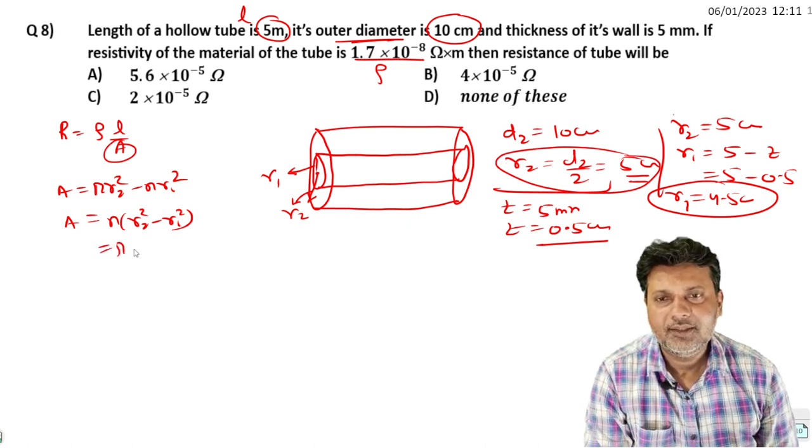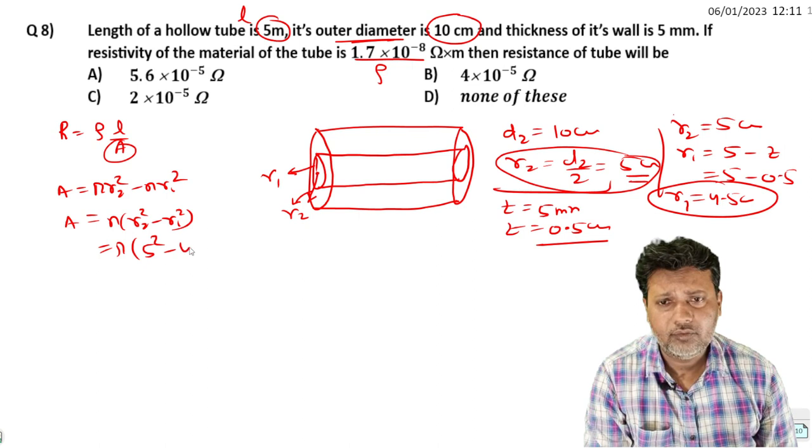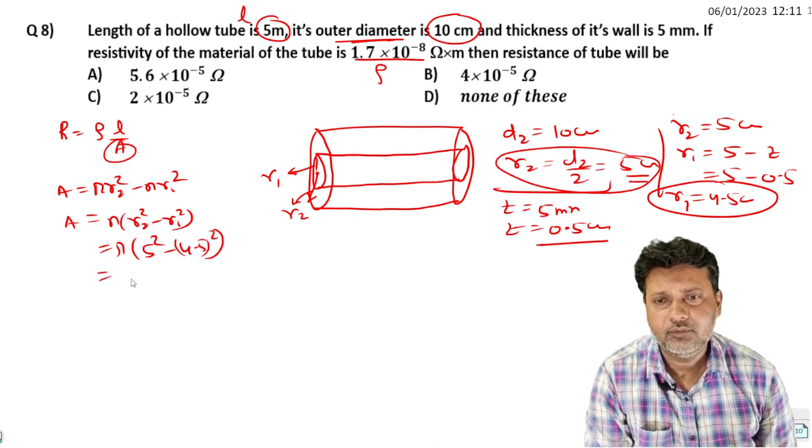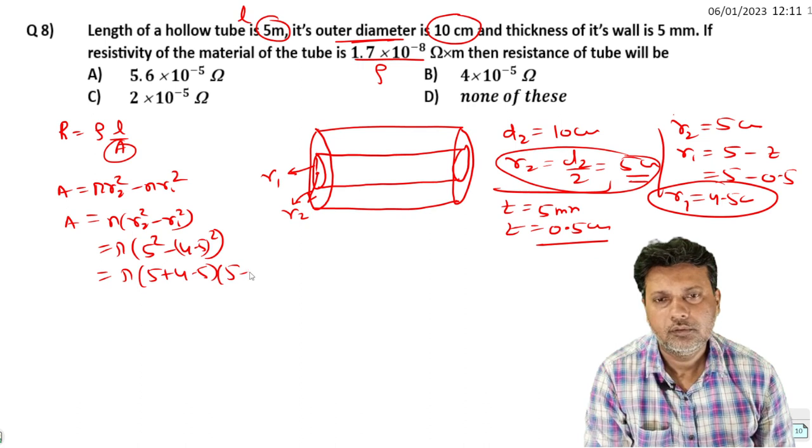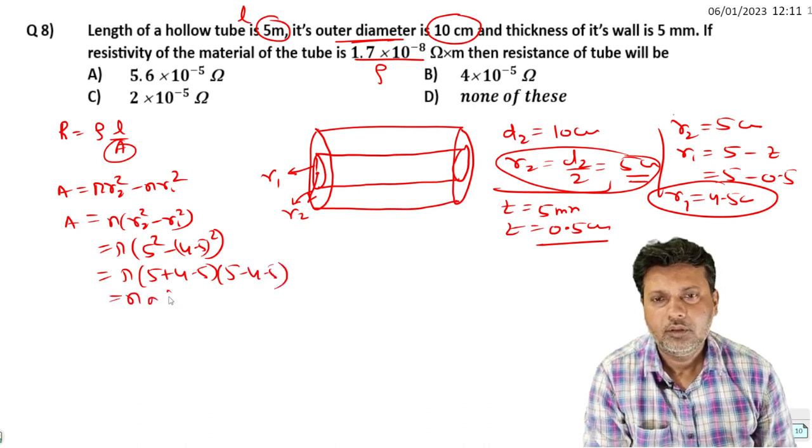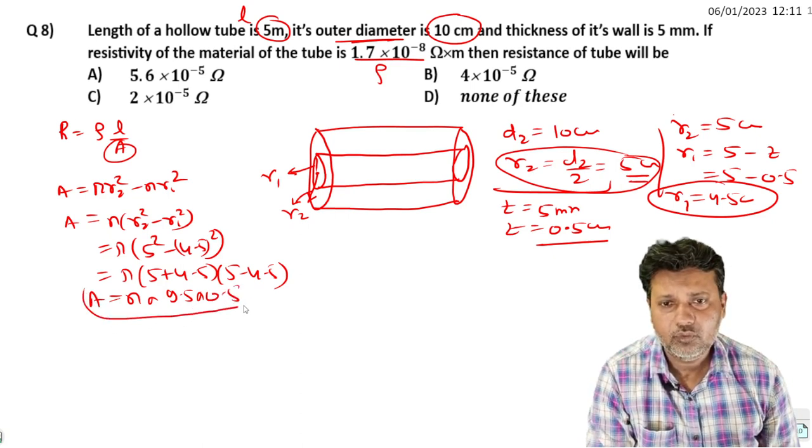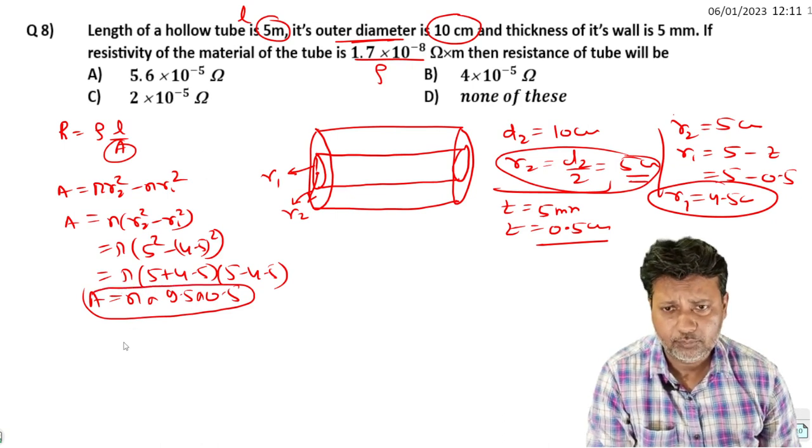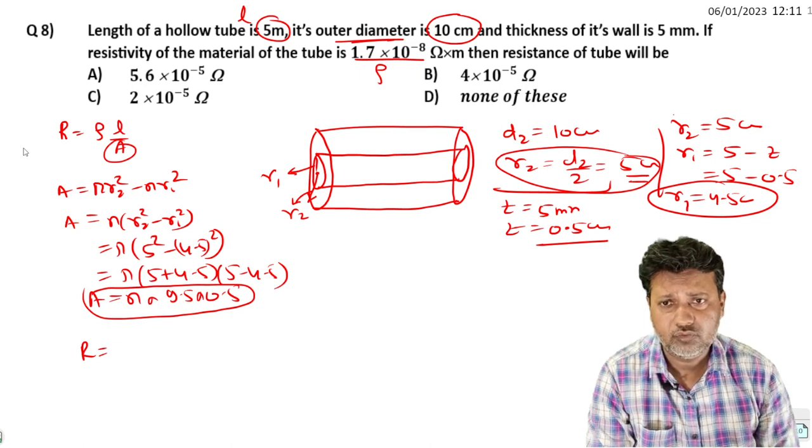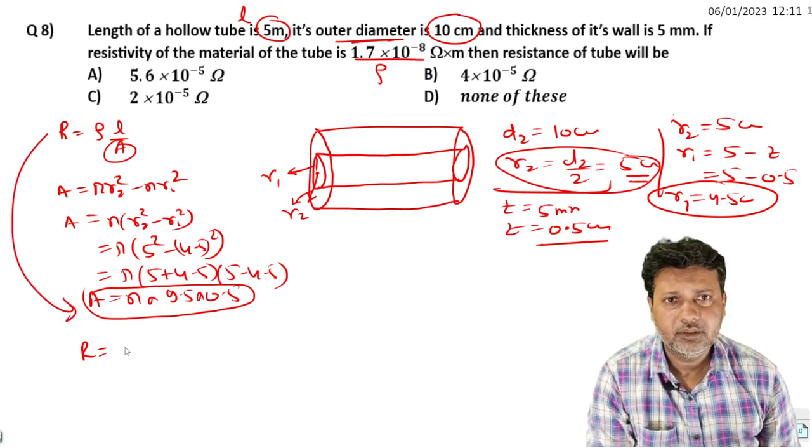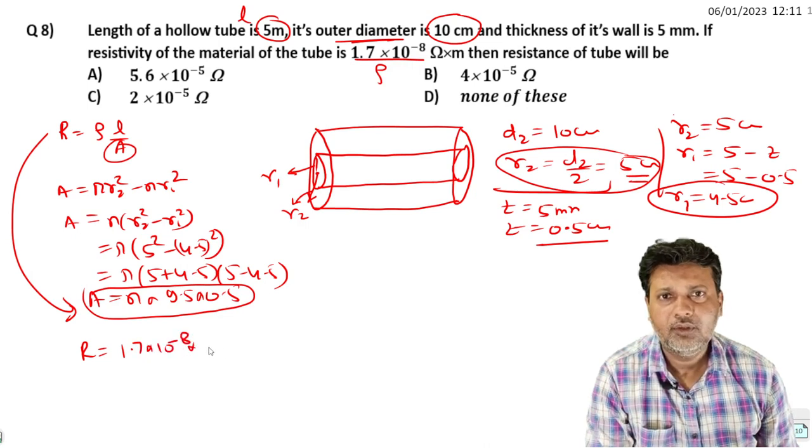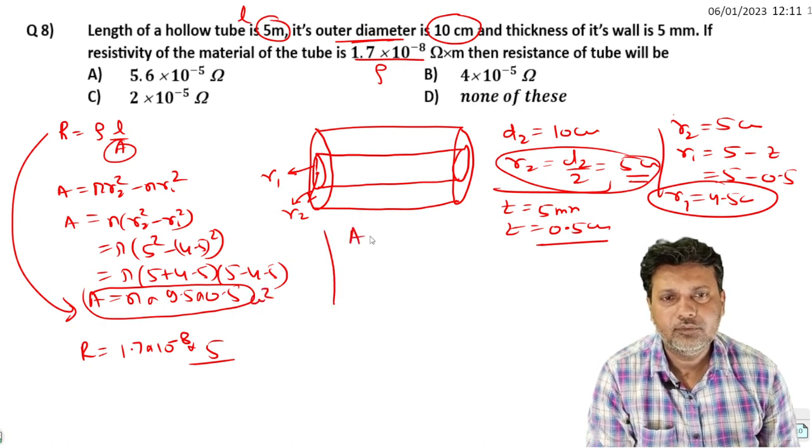Now putting values: pi times 5 squared minus 4.5 squared. Using the formula a plus b times a minus b, we get pi times 9.5 times 0.5 times 10 to the power minus 4 meter squared. R equals 1.7 times 10 to the power minus 8 into length 5 meters divided by this area.